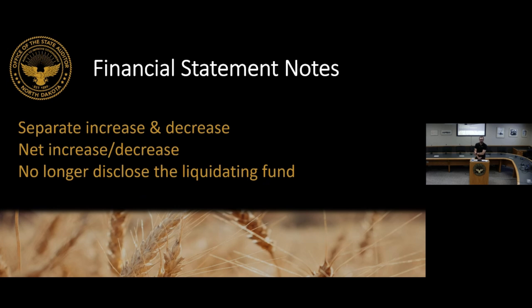For note disclosures, GASB actually threw financial preparers a bone here — the standard decreases what you need to include. In the past you always had to separately disclose the increases and decreases to the compensated absence liability. Now you can either show them separately or net them together as a net increase or decrease — just disclose in the notes that it's a net amount. Also, you no longer have to disclose the liquidating fund that will be used to pay the compensated absence, such as the general fund or road and bridge fund.